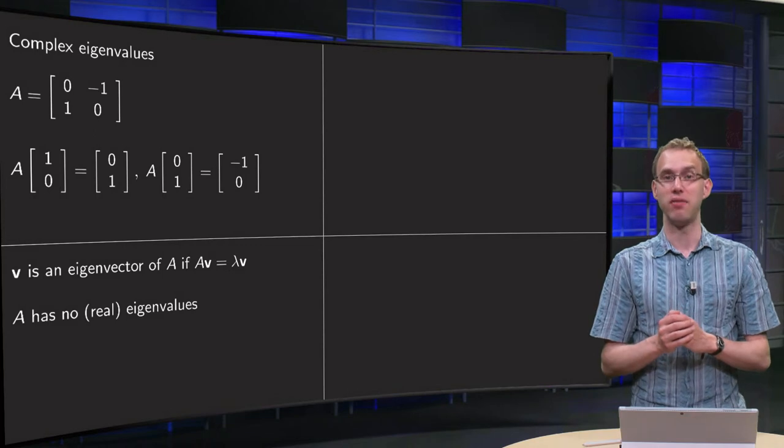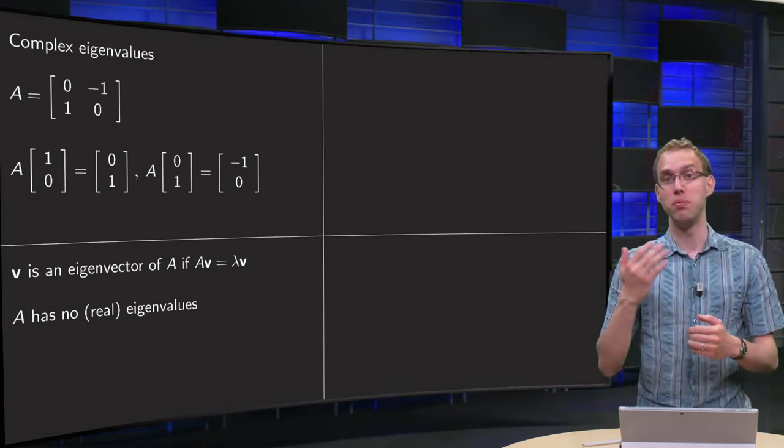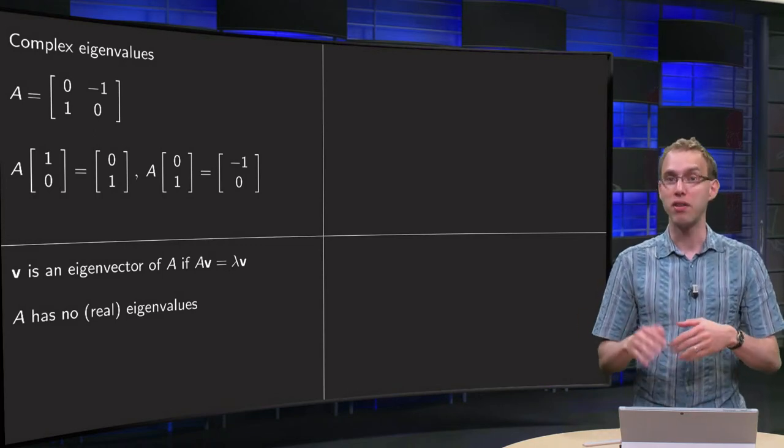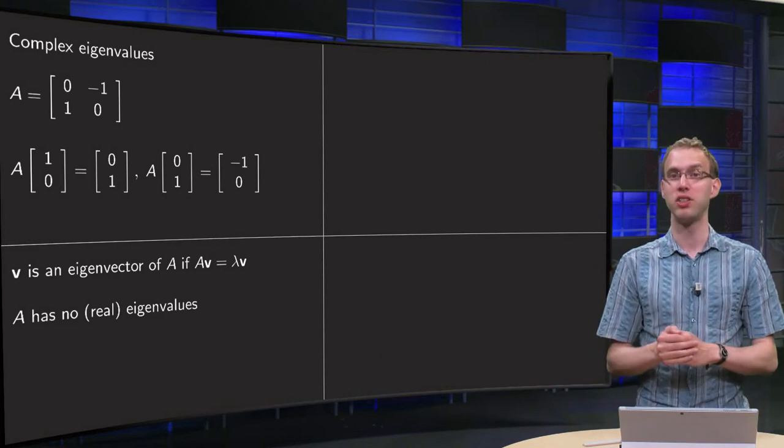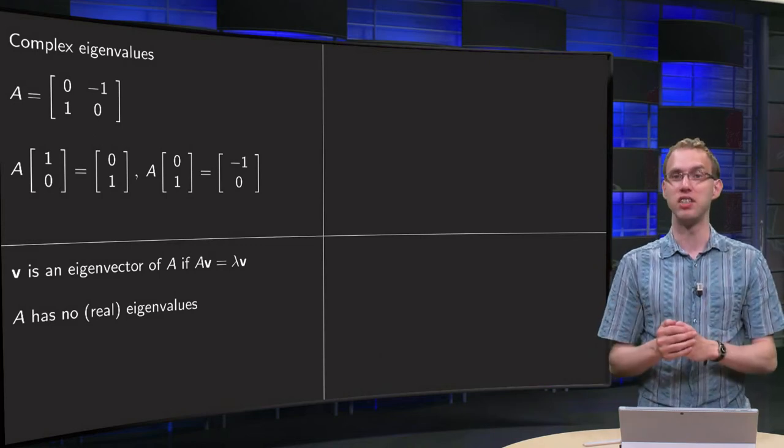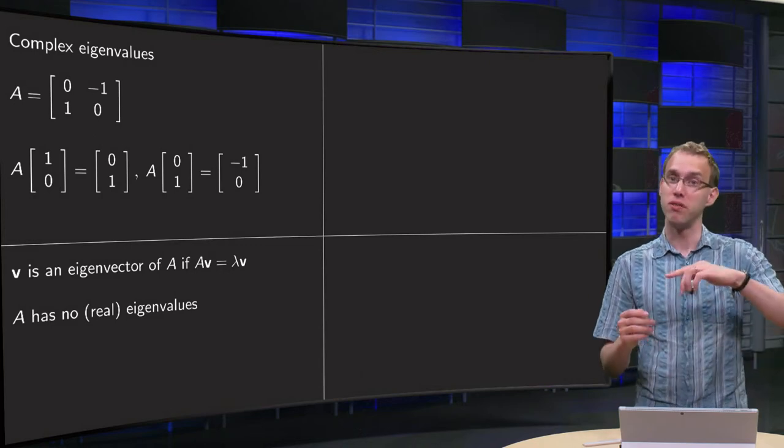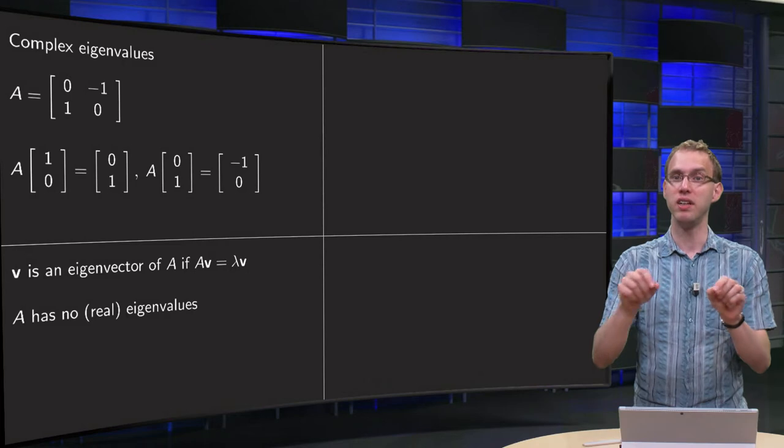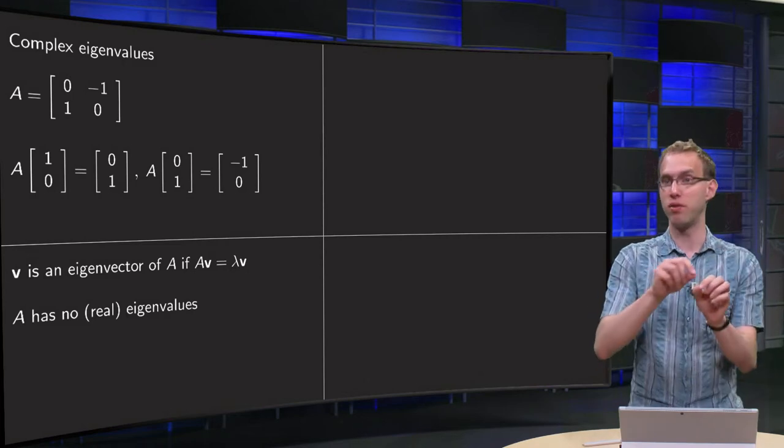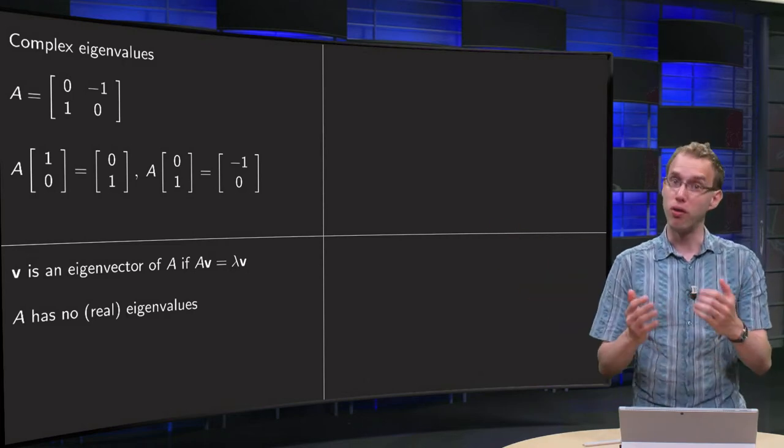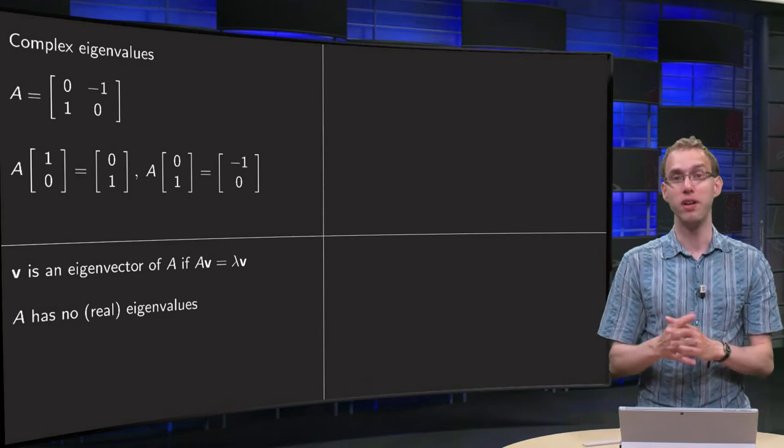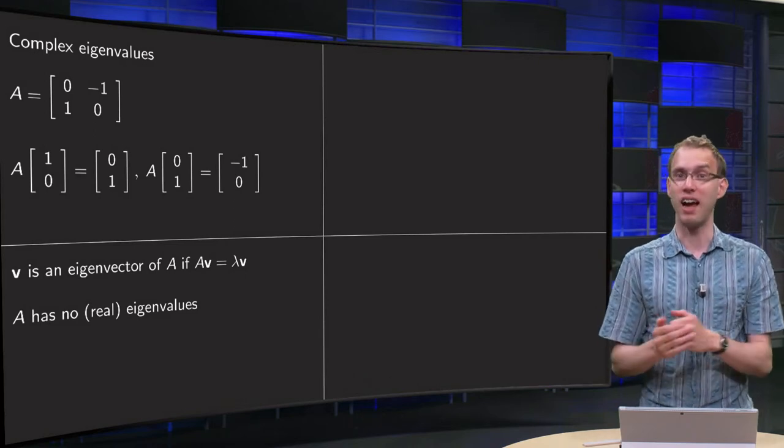Well, V is an eigenvector if A times V is a multiple of V. However, if you rotate vectors about 90 degrees, A times V will never be a multiple of V because V is rotated. If you have a V, then A times V will be rotated and never be a multiple of V. So probably we will not find any eigenvalues.